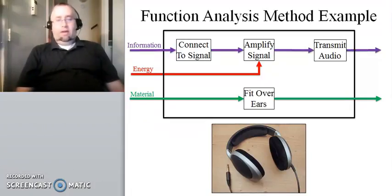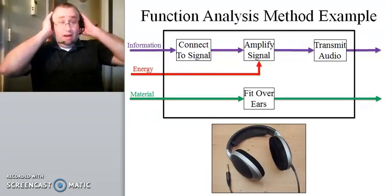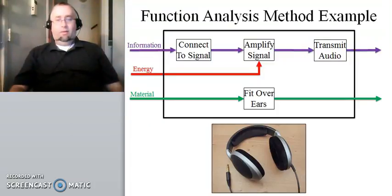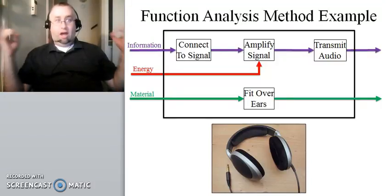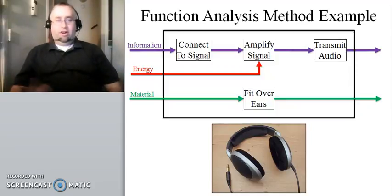Okay, so here is an example that I quite like. It's a functional analysis method example for headphones, like the headphones that I'm wearing right now. And the way that I've broken this down is that there are three inputs: information, so that's the audio signal, although it doesn't start its life as an audio signal. It's a digital signal from your MP3 player or your computer. Then there's an energy input, and then there is what I'm calling material. This is more of a functional requirement, but we'll see here in a second how that works.